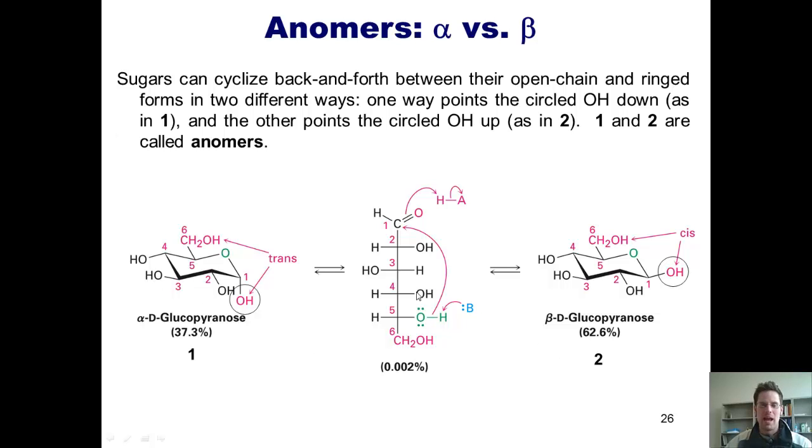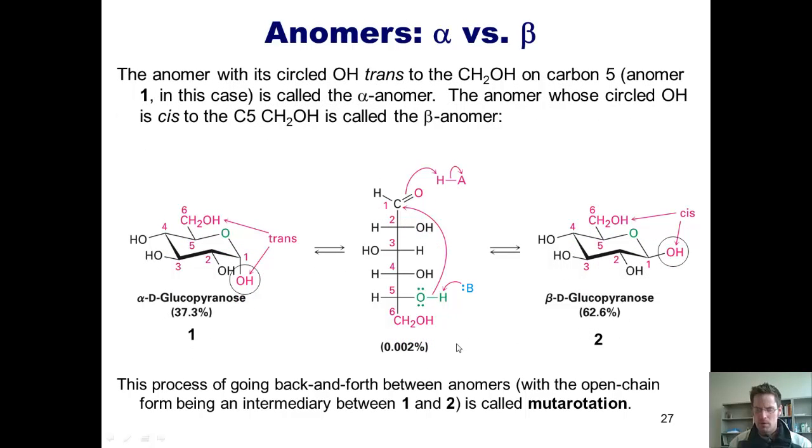This process of going back and forth in equilibrium between these two rings is called mutarotation. And of course, carbon one is called the anomeric carbon. Now this brings up an important point.